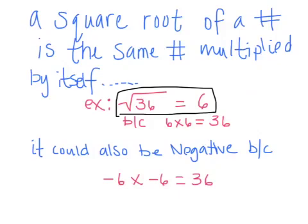A square root of a number is basically just the same number being multiplied by itself. So an example would be, if I had the square root of 36, I need to think, what times itself is 36? So the final answer would just be 6, and that is because 6 times 6 is 36.